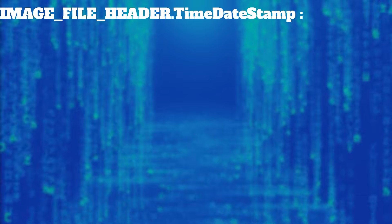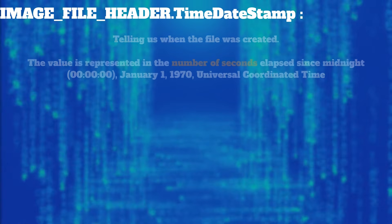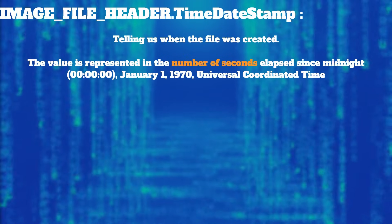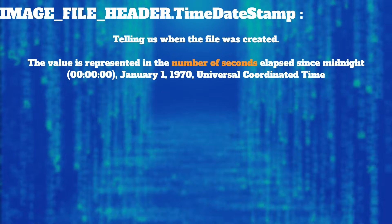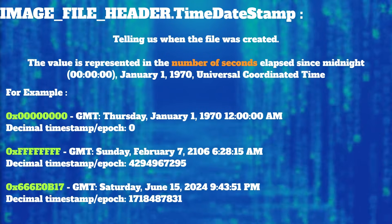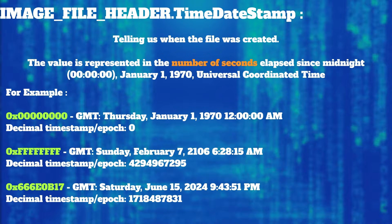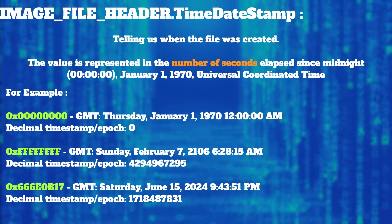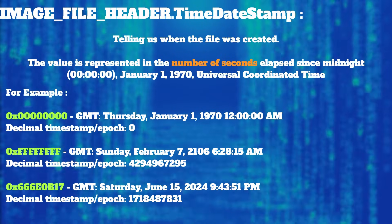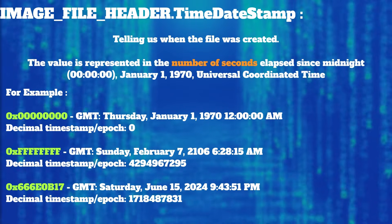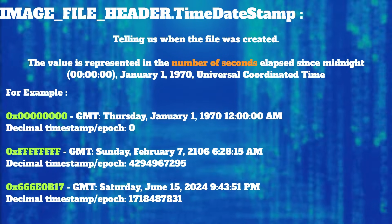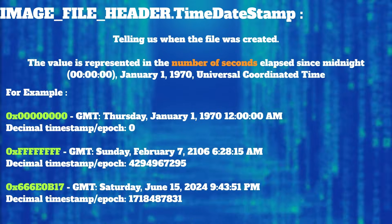TimeDateStamp represents the date and time the image was created by the linker. The hex value represents the number of seconds elapsed since midnight, January 1st, 1970. Many malware creators forget to change this field, so malware analysts can know how long the malware has been in the wild.